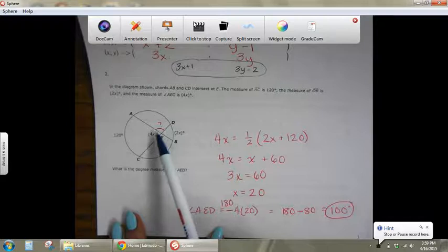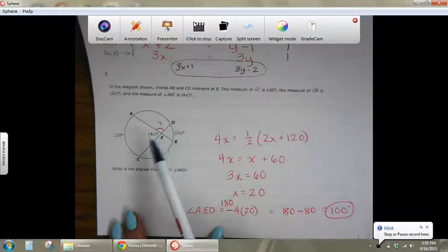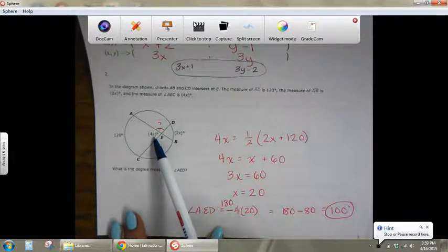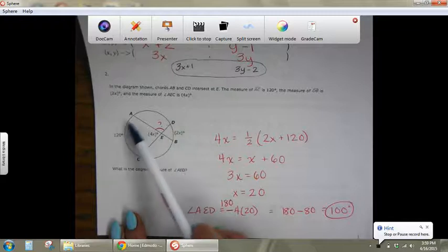Since this angle here where 4X is, it's not a central angle but it is an interior angle, so I'm going to find its value by taking half of these exterior arcs added up together.